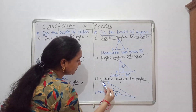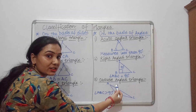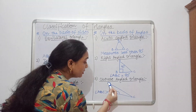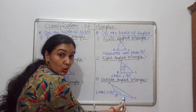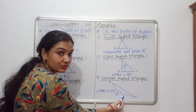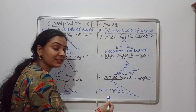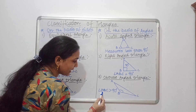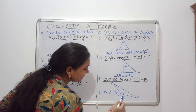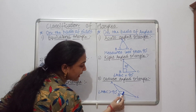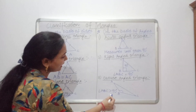Now comes the obtuse angled triangle. In an obtuse angled triangle, one of the angles of a triangle is more than 90 degrees. Here you can see that in triangle ABC, angle B is more than 90 degrees.